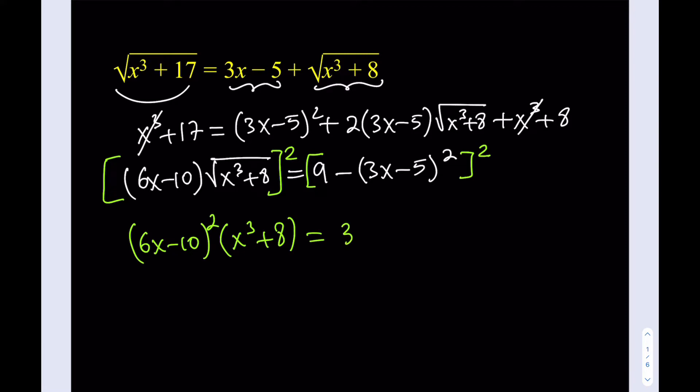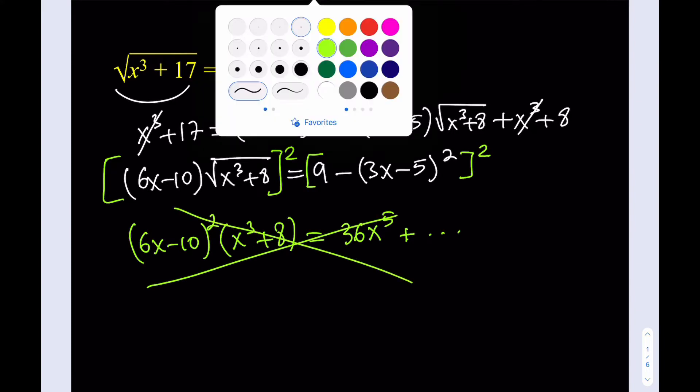Wow. You're going to be getting something like 36x squared multiplied by x, so it's going to be 36x to the 5th. What? Wow. This is like a quintic equation. There's no way we can solve it, right? Okay. So we're not going to use this approach. Forget about it. We'll do something else.